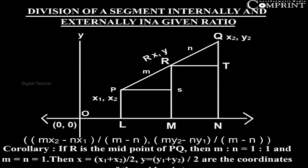Hence for external division, the coordinates of R that divides PQ in m:n ratio are ((mx₂ - nx₁)/(m - n), (my₂ - ny₁)/(m - n)). Corollary: If R is the midpoint of PQ, then m:n = 1:1 and m = n = 1, so x = (x₁ + x₂)/2, y = (y₁ + y₂)/2 are the coordinates of the midpoint.